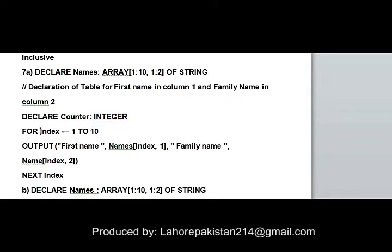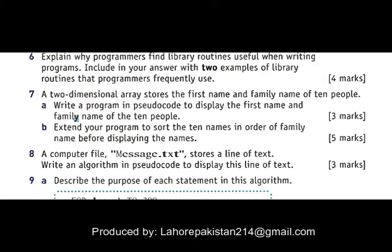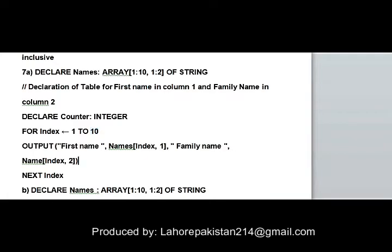The 'counter' index will be the pointer to this array. It will start from 1 and go till 10. Next, to display the first and family names, you will start from the first index and repeat until the 10th index. On each iteration, the first name will be picked from the first column.